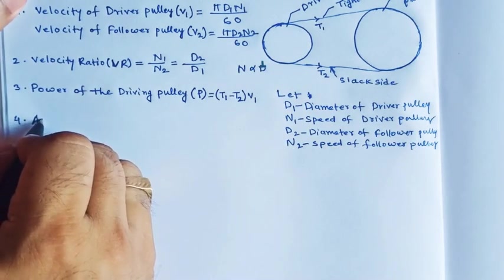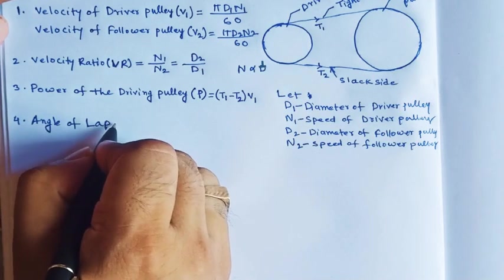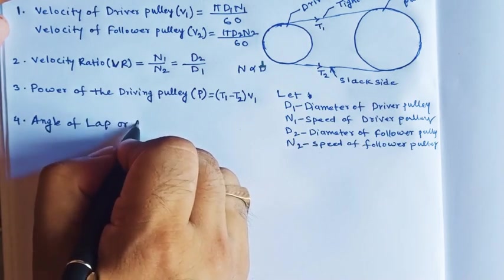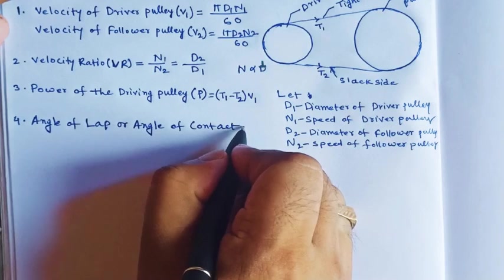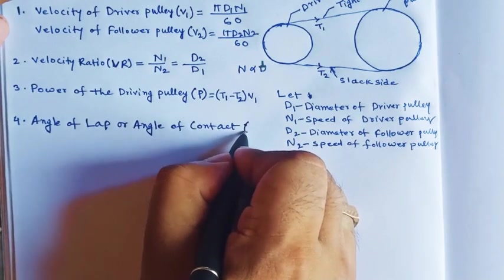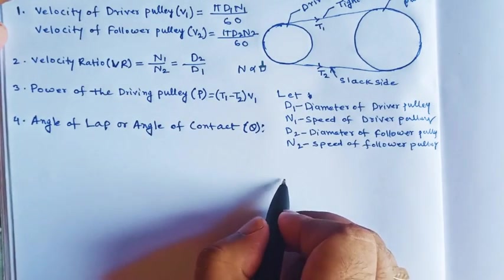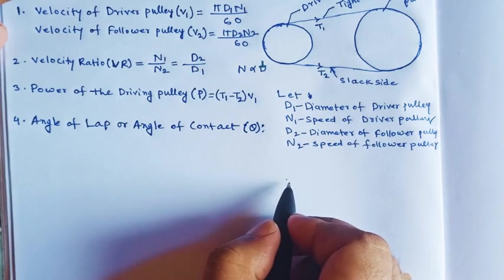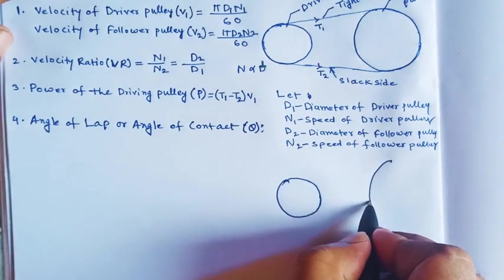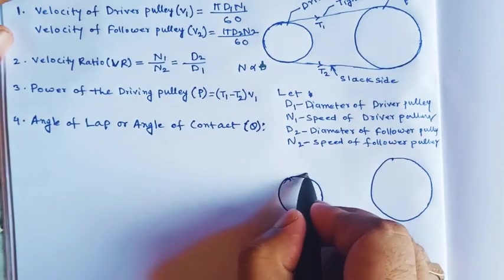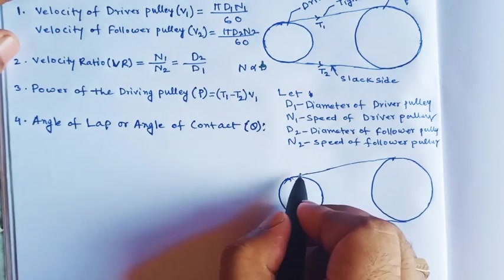Fourth is the angle of lap, also called the angle of contact, which is denoted by theta. Consider this is an open belt drive. This is the open belt configuration.